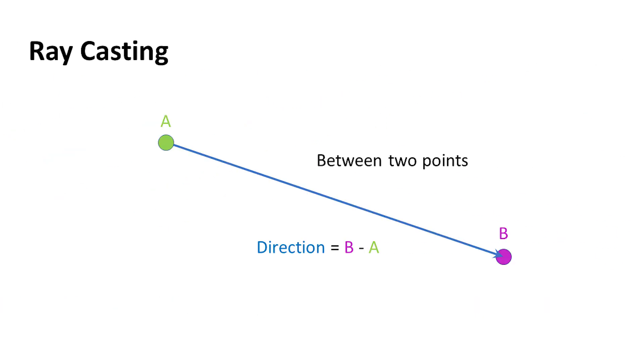You can also use ray casting between two points. You've got point A and point B, and you shoot a ray to see if anything's in between. This could be used, for example, to check for shadows. If you already have the points, like a light and a surface, you can shoot that ray, and if anything gets in the way, then you know that point B is in shadow.